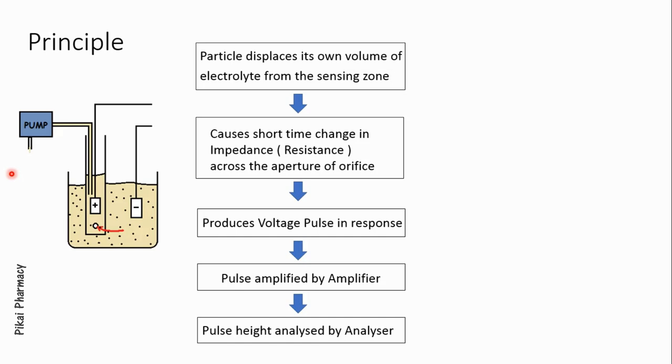This instrument counts the number of particles suspended in a solution and also determines their size. There is a pump attached to the glass tube which pumps a known amount of electrolyte from the outer solution. A fixed volume of electrolyte moves from the outer solution to the inside of the glass tube through that tiny orifice, and during this movement the suspended particles also enter through the orifice.